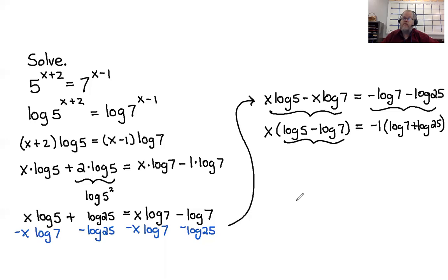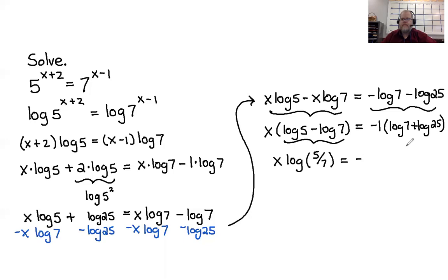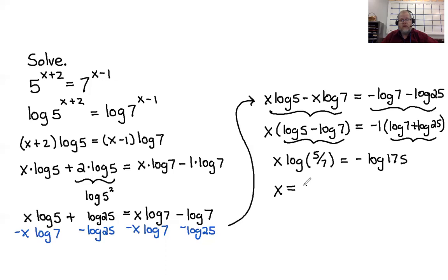Using the quotient property, log 5 minus log 7 becomes log of 5/7. On the right, using the product property with the plus sign, 7 times 25 equals 175, giving negative log of 175. Dividing both sides by log of 5/7 gives the exact answer. x equals negative log(175) divided by log(5/7).